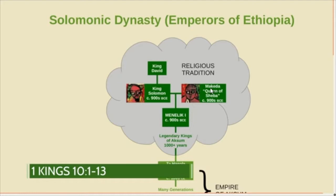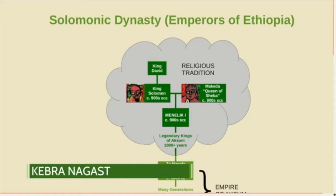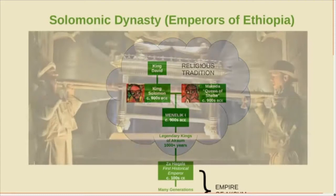According to that account, they talk for a long time, exchange some very expensive gifts, and then she returns home. But according to Ethiopian tradition, that's not all that happened. According to the Kebra Negast, which is kind of Ethiopia's national origin story, the queen of Sheba was named Makeda, and she had relations with Solomon during her visit. When she returned home, she gave birth to Menelik, who became the first king of Ethiopia. Menelik later goes back to meet Solomon as an adult and steals the Ark of the Covenant and brings it back to Ethiopia.